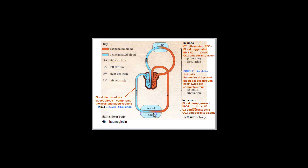Oxygen then diffuses from the blood into the body cells while CO2 moves in the opposite direction into the plasma. That deoxygenated blood gets carried back towards the right atrium, then the right ventricle, and is pumped towards the lungs where it gets rid of the waste gases and takes in more oxygen to once again become oxygenated blood.